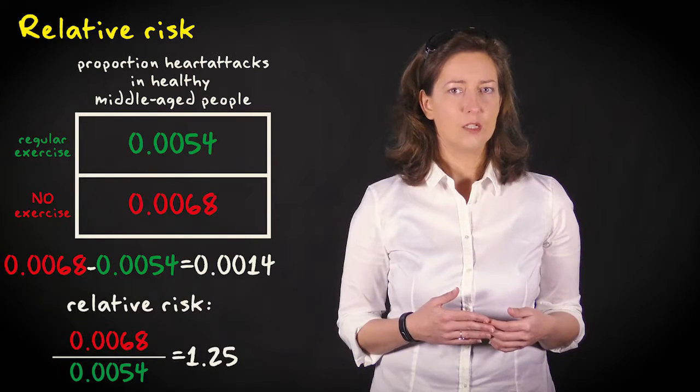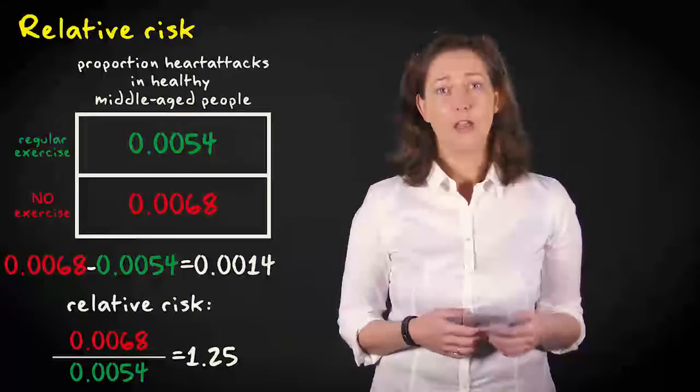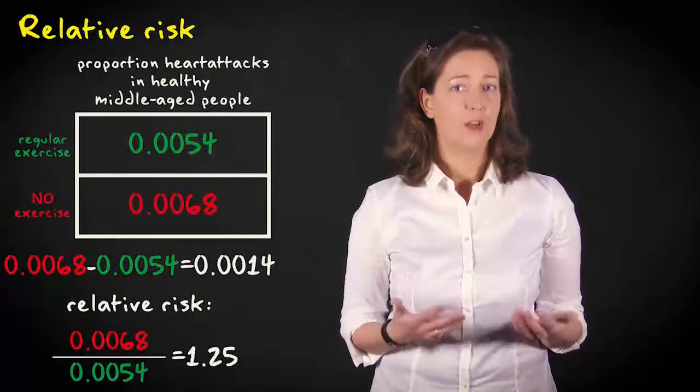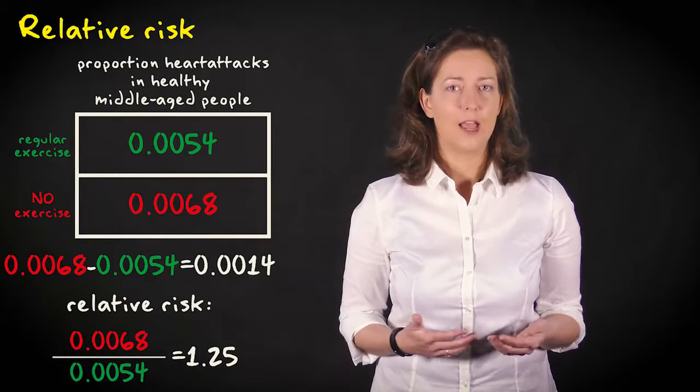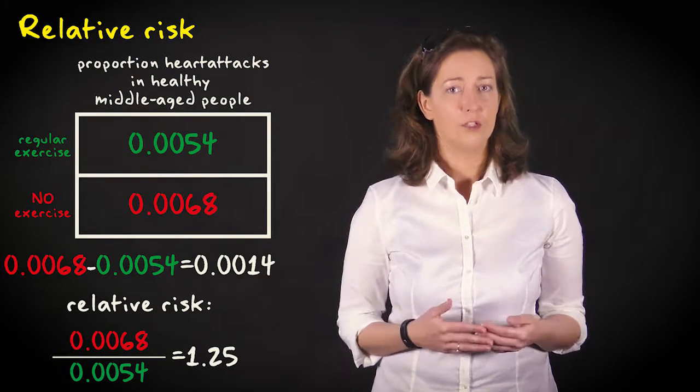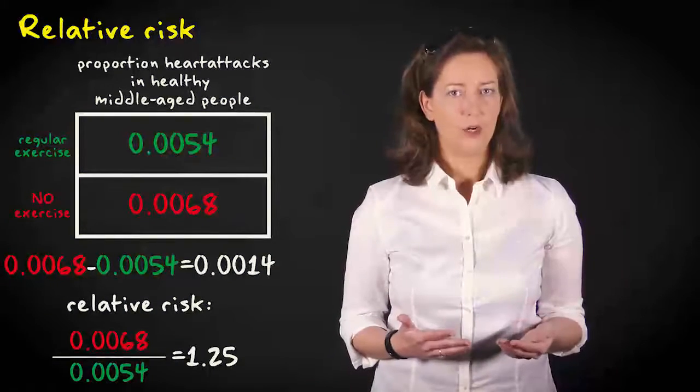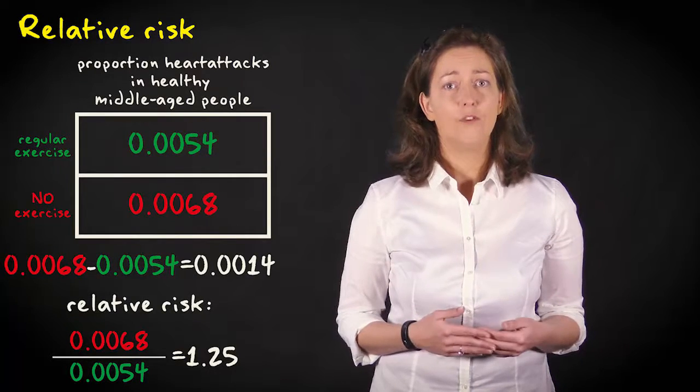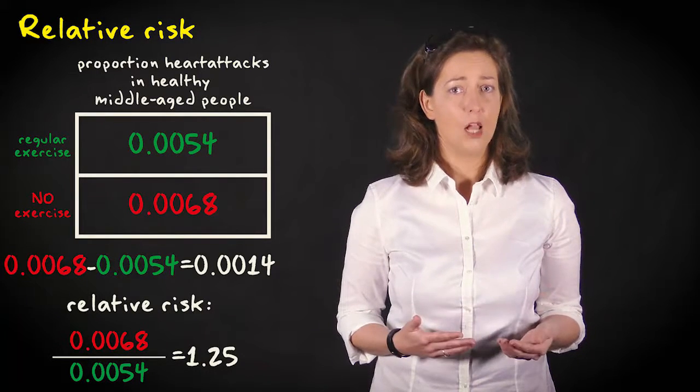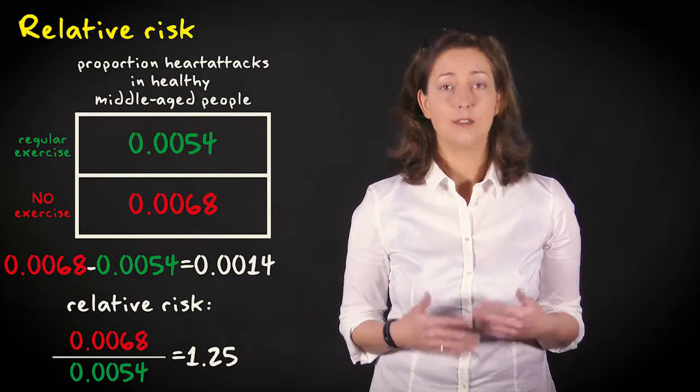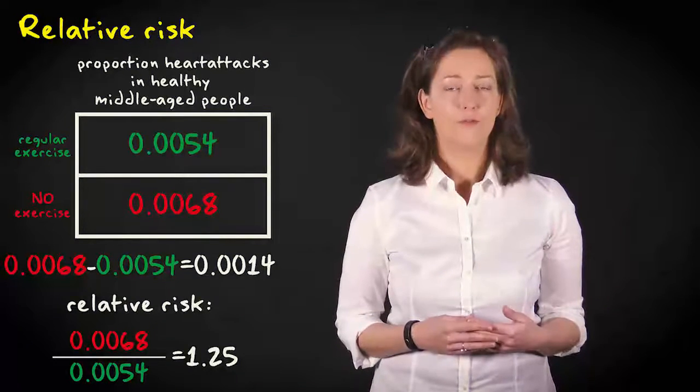If we look at the relative risk, we see that the group that doesn't exercise is 1.25 times or 25 percent more likely to have a heart attack. Confidence intervals can be computed for relative risks, but we won't go into the calculation method here. As you can imagine, relative risk is often used in medical sciences and epidemiology where low-frequency diseases and symptoms form common topics of research.